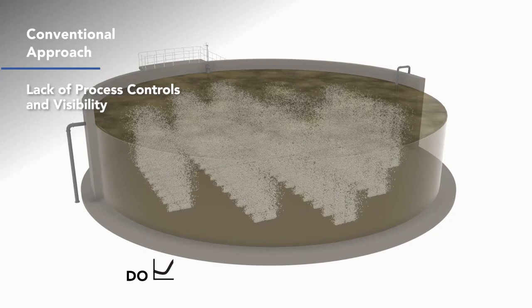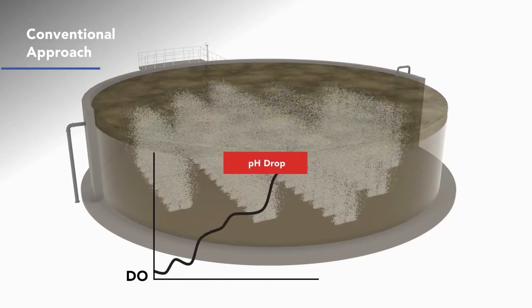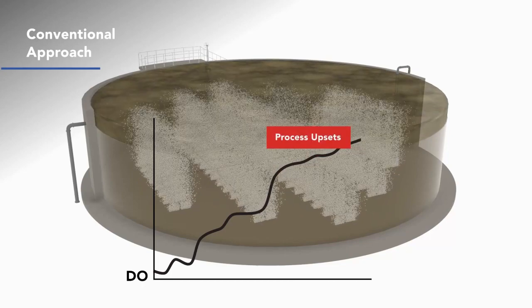Without control, the DO climbs and the problems set in. Wasted energy, alkalinity decline, pH drop, process upsets, and foaming.